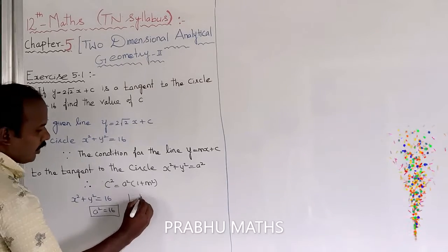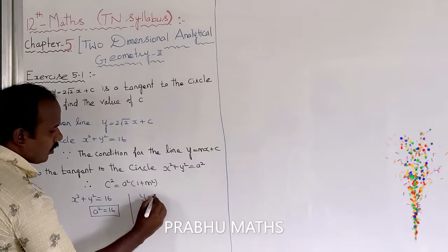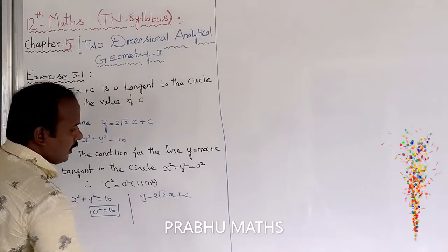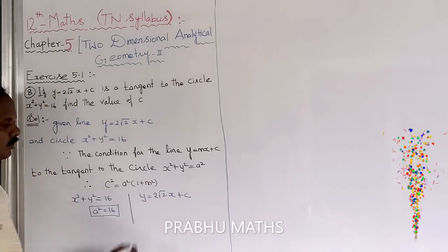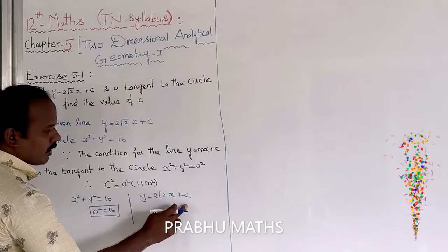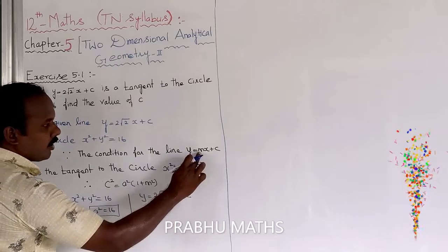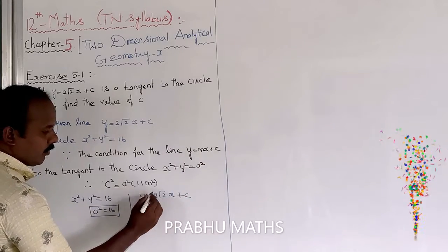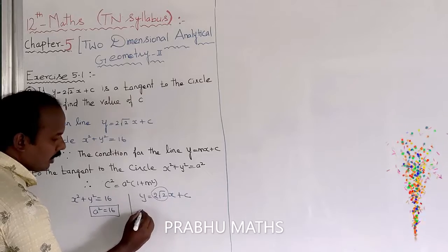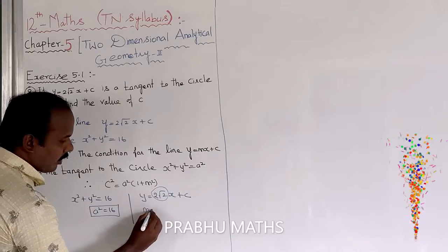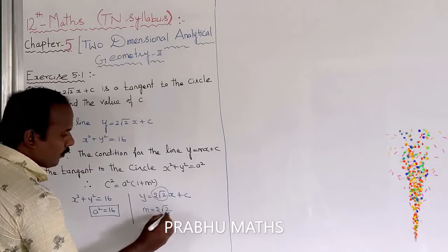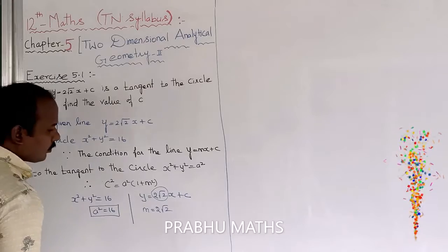From the given line y = 2√2·x + c, comparing with y = mx + c, the coefficient of x gives m = 2√2.